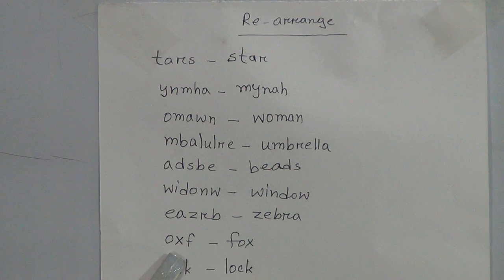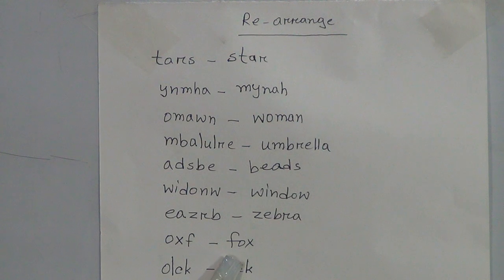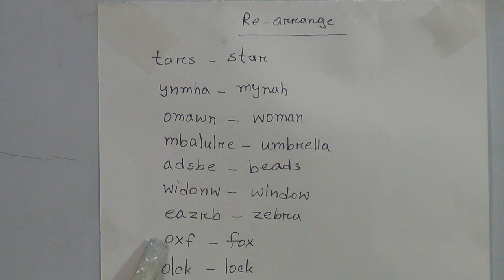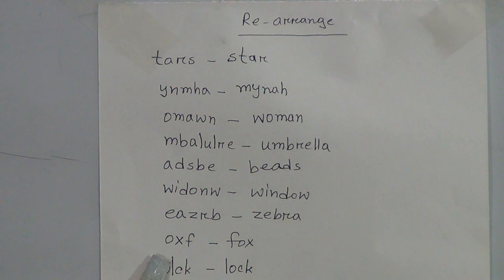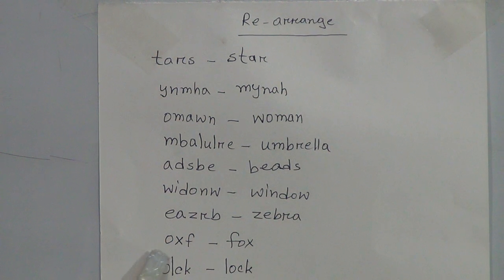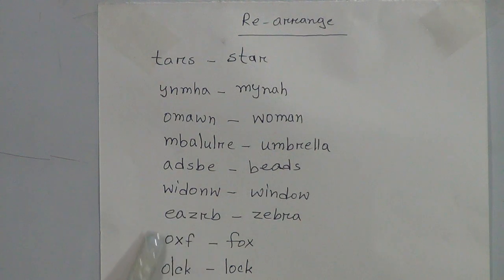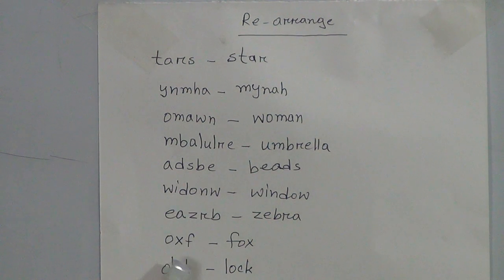Then the next jumbled letters: O, X, F. If we arrange them properly, we will get a meaningful word: fox. Spelling: F-O-X, fox. In these jumbled letters, the letter F is the last letter. Then O is found before the letter X — so F-O. The last letter X is found in the middle. So if we arrange these letters properly, we get F-O-X, fox.